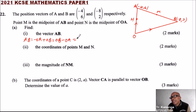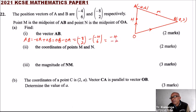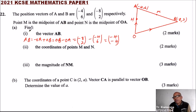We can rewrite this as OB minus OA. OB is (-8, 2) — the position vector means the vector from the origin. OA is (-4, 6). So AB equals (-8 minus -4, 2 minus 6) = (-8 + 4, 2 - 6) = (-4, -4). That is vector AB.